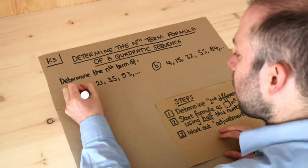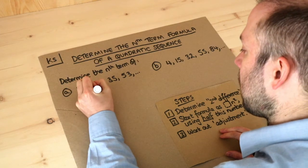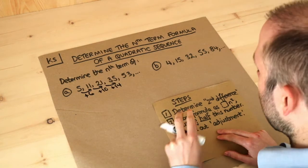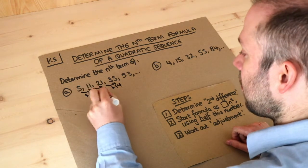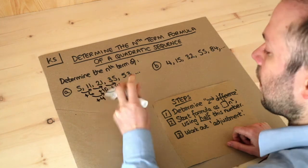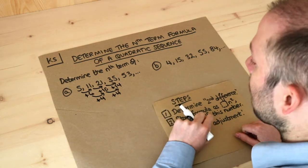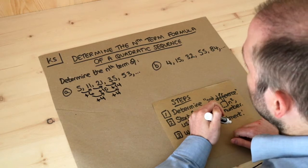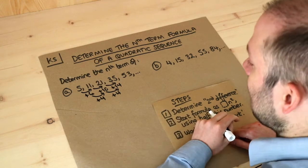Let's look at the difference between terms: it's going up by 6, then 10, then 14. Now the difference of the difference — the second difference — is going up by 4 each time, so it stays the same. When the second difference is constant, we have a quadratic sequence, and it's called quadratic because the formula we'll get is a quadratic expression.